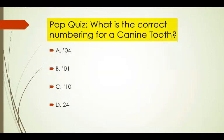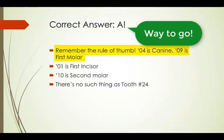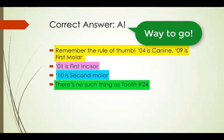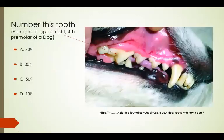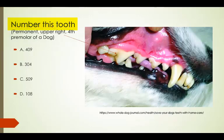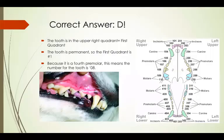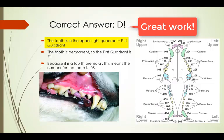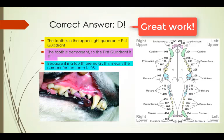What is the correct numbering for a canine tooth? The correct answer is A. Remember the rule of thumb: 04 is canine and 09 is first molar. Therefore, 01 is a first incisor and 10 is a second molar. If you keep in mind the rules for the Triadan system, you'll notice there's no such thing as tooth number 24. Number this tooth — it is a permanent upper right fourth premolar in a dog. The correct answer is D. Because the tooth is in the upper right quadrant, we can say it is in the first quadrant, and because it is a permanent tooth, the quadrant is number one. The arrow pointed to a fourth premolar, so the correct number on the tooth is 08. Therefore, the number for the tooth according to the Triadan system is 108.